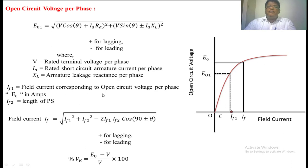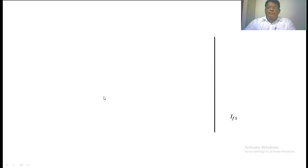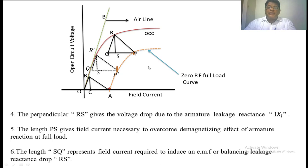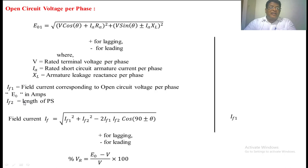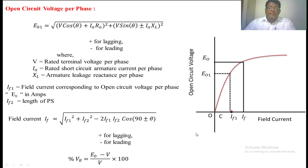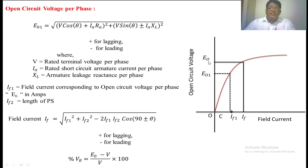IF1 is obtained from the OCC. In the previous diagram, the length PS gives the second field current IF2 — convert it from centimeters to amperes, as it represents field current. Once you know IF1 and IF2, use the formula: IF = sqrt(IF1² + IF2² + 2·IF1·IF2·cos(90° ± θ)), where plus is for lagging power factor and minus is for leading power factor. Once you know this total field current, you determine what voltage will be induced in the alternator, which includes armature resistance drop, leakage reactance drop, and armature reaction effects. This is the actual voltage induced in the alternator with all effects.